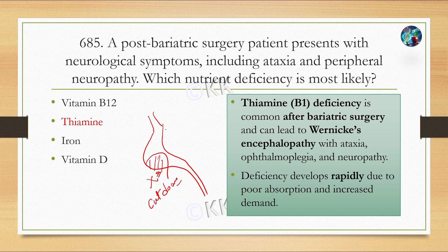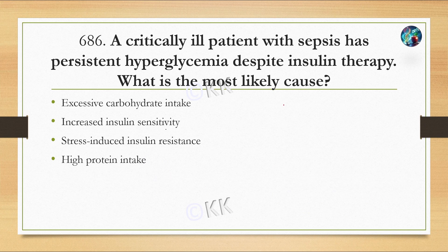Next question: a critically ill patient with sepsis has persistent hyperglycemia despite insulin therapy. What is the most likely cause? Option A: excessive carbohydrate intake. Option B: increased insulin sensitivity. Option C: stress-induced insulin resistance. Option D: high protein intake.